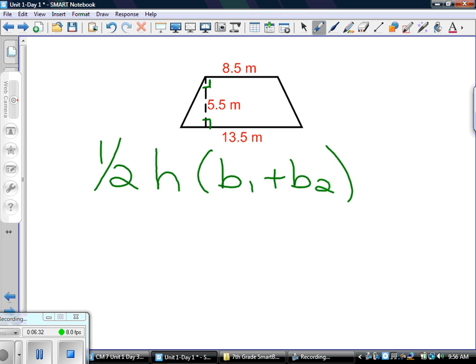B1 and B2 stand for base 1 and base 2. Don't automatically think bottom all the time for base. Bases can come as various parts—top, bottom, left, right. It all depends on the rotation of the figure. In this case, the height is 5.5, and the bases that create the 90-degree angles with that height are 8.5 at the top and 13.5 at the bottom. One of the key things to note is that that addition is in parentheses. So according to order of operations, you must take the 8.5, add it to 13.5 first, which is 22.